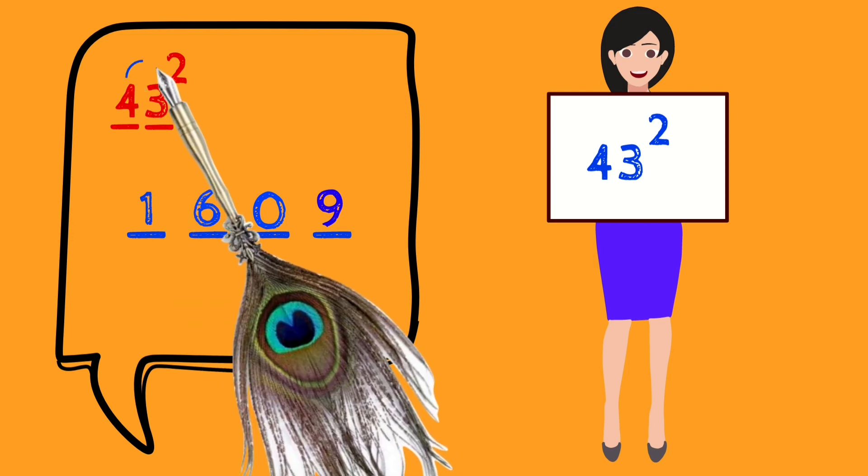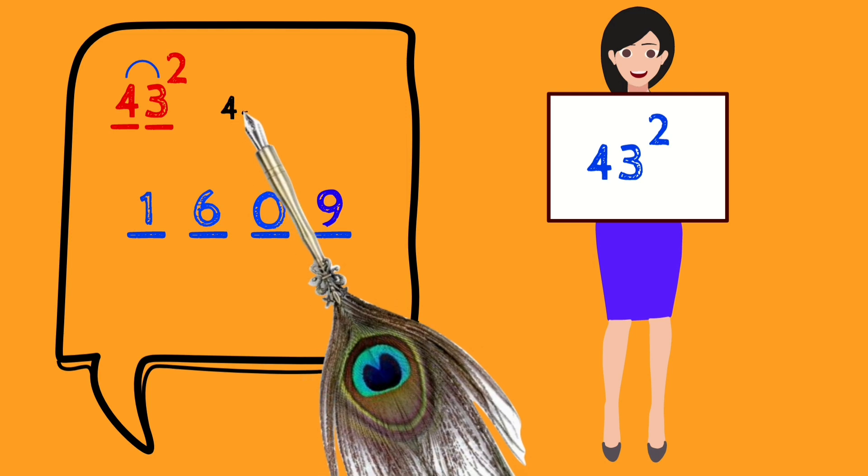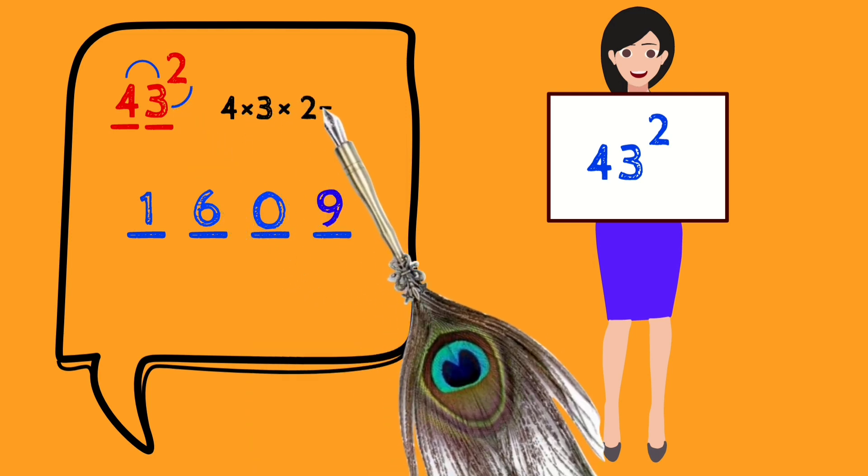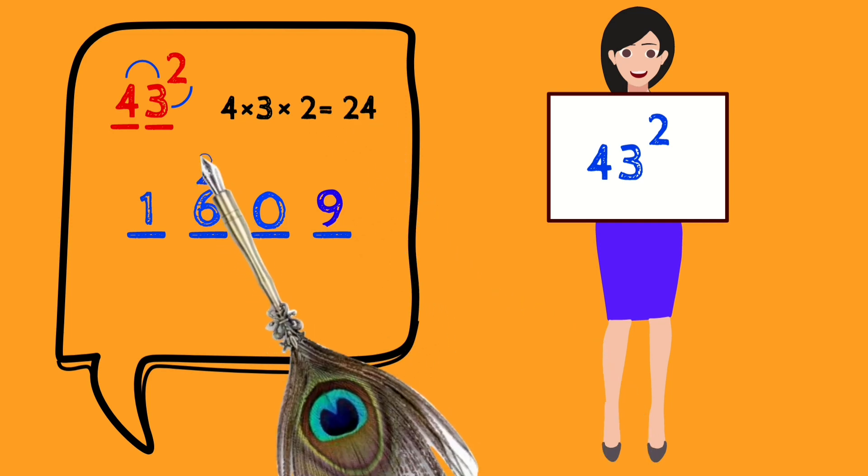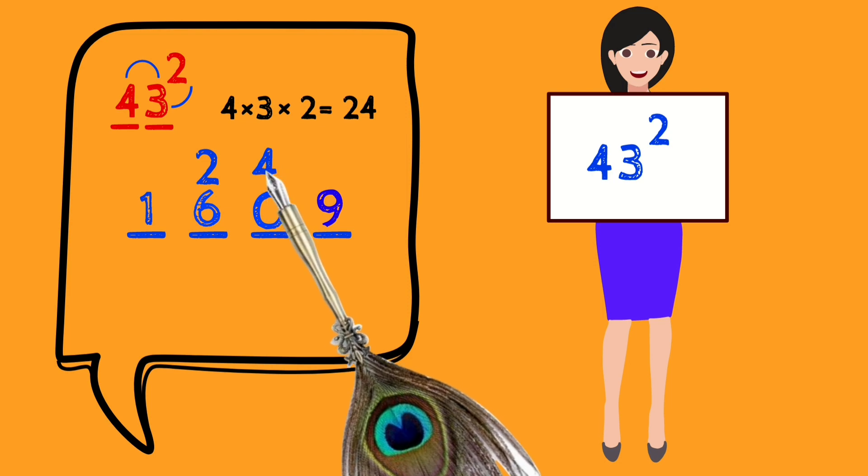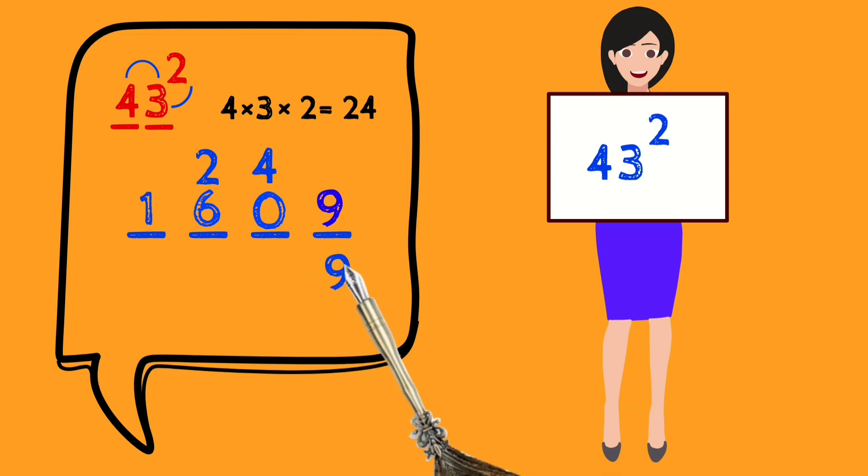Then multiply 4 and 3 with 2. It becomes 4 × 3 × 2 = 24. Place it above the middle two blanks and add them with the existing numbers. We get the answer 1849, which is the square of 43. This is applicable for all two-digit numbers. Let's see another example.